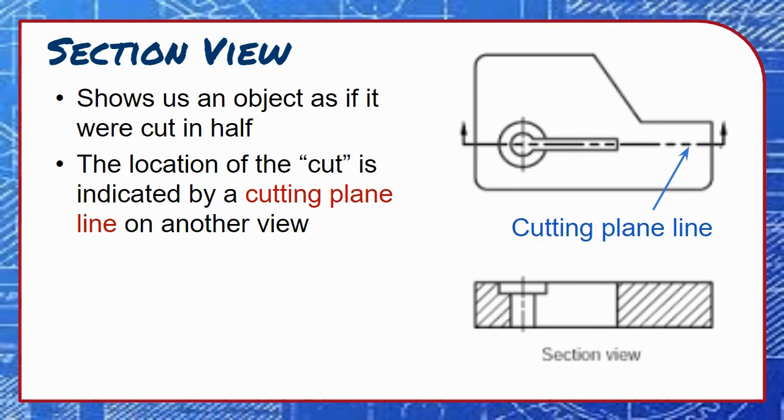Cutting plane lines show us where the object was cut to create the section view. They are thick, bold lines with a two-dash pattern repeated every so often. Arrowheads on the ends of a cutting plane line point in the direction that the object is viewed in the section view.